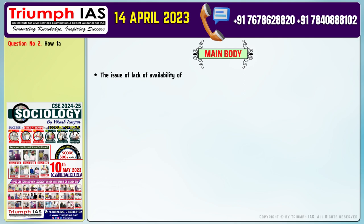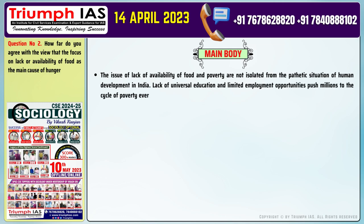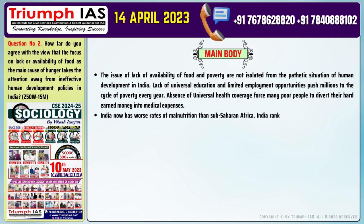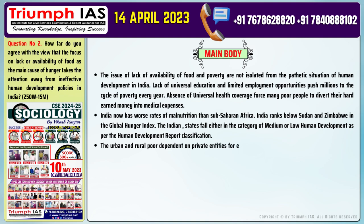The main body of the answer: The issue of lack of availability of food and poverty are not isolated from the pathetic situation of human development in India. Lack of universal education and limited employment opportunities push millions into the cycle of poverty every year. Absence of universal health coverage forces many poor people to divert their hard-earned money into medical expenses. India now has worse rates of malnutrition than sub-Saharan Africa, and ranks below Sudan and Zimbabwe in the Global Hunger Index. Indian states fall either in the category of medium or low human development as per the Human Development Report classification.